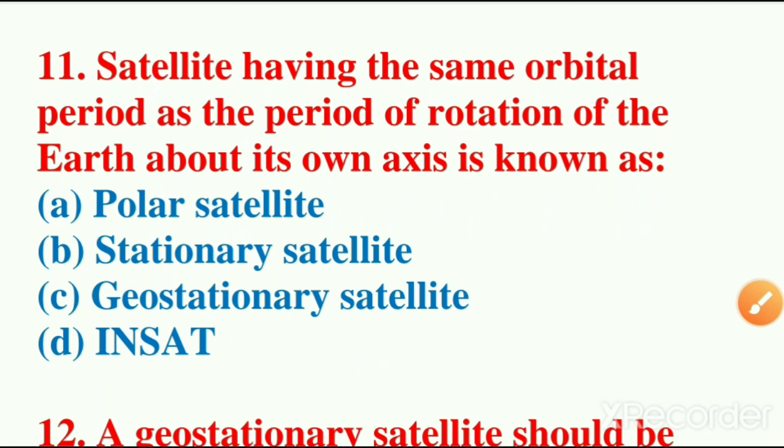11th question: satellite having the same orbital period as the period of rotation of the Earth about its own axis is known as? Options are polar satellite, stationary satellite, geostationary satellite, INSAT. The correct answer is C, geostationary satellite. This is also one of the important questions.